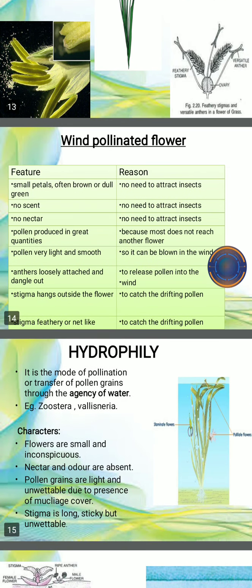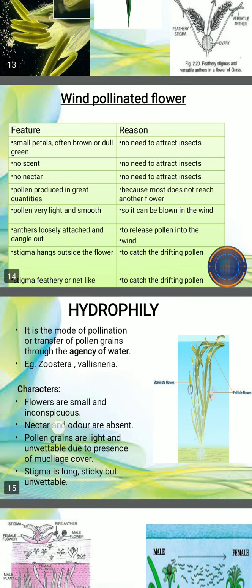Pollen grains are light and very smooth so they can be blown by the wind, and they are loosely attached and dangle out to release the pollens into the wind. Stigma hangs outside the flowers to catch the drifting pollens. Stigma is feathery or net-like to catch the drifting pollens.